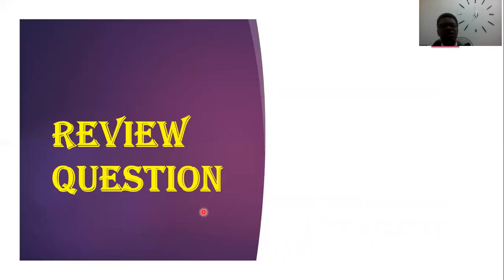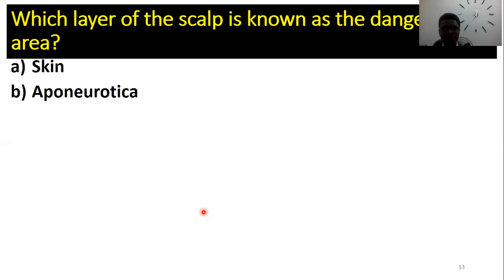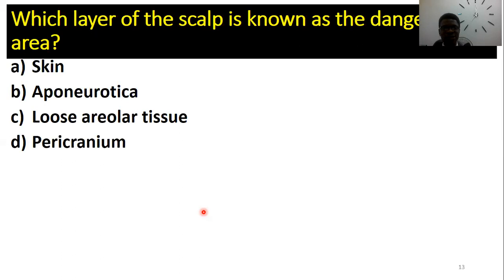Let's take a review question to see how much you've learned so far. Which layer of the scalp is known as the dangerous area? The skin? The aponeurotica? The loose areolar tissue? Or the pericranium?